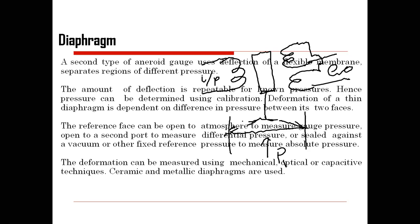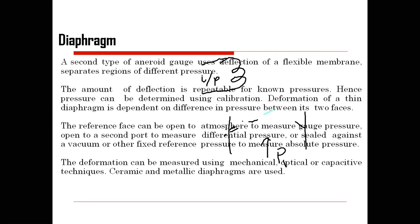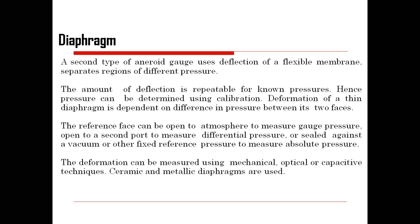A good example of a diaphragm is in a stethoscope at a clinic. Doctors use it to check the heart rate — the heartbeats are measured depending on the inputs sensed by the stethoscope. The movement of the diaphragm on the stethoscope is sensed and transmitted to our auditory system, i.e., the ear.